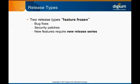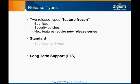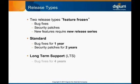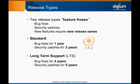The two types of Asterisk releases are standard and long-term support, or LTS, releases. Standard releases are maintained for one year from their release date, meaning an effort will be made to correct identified bugs for a period of one year. Additionally, a standard release will be covered with security fixes for two years from the release date. Long-term support releases will be maintained for four years from their release date, with security fixes for a total of five years. Asterisk 1.6.2 is a standard release, and Asterisk 1.8 is a long-term support release. View the Asterisk Versions page on the Asterisk Wiki for more information. A link is found on the Attachments tab.